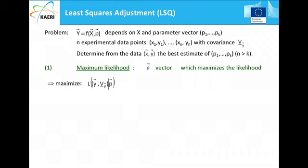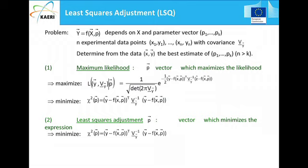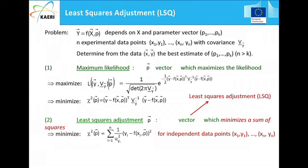Maximum likelihood and chi-square minimization are in principle the same thing when input quantities are normally distributed. Maximizing the likelihood of your parameters is equivalent to minimizing the chi-square expression. If you only take the diagonal terms of the covariance matrix, assuming zero covariance terms, you minimize a sum of quadratic terms — which is why it's called least squares adjustment. The mathematics behind least squares adjustment involves a linear model with partial derivatives of the function with respect to the parameters. You get equations for the optimal parameters and for the covariance of the parameters. It is better to first program the covariance equation, then compute the parameters.